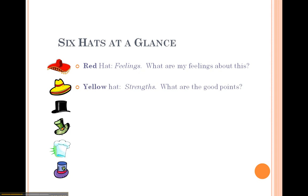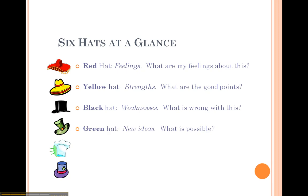Yellow hat thinking is when you're looking at the strengths of a topic, project, or idea. The black hat: if you're doing black hat thinking, you're looking at weaknesses — what might be wrong or what might be missing. If you're doing green hat thinking, you're doing creative thinking and coming up with new ideas and possibilities regarding the topic you're thinking about.